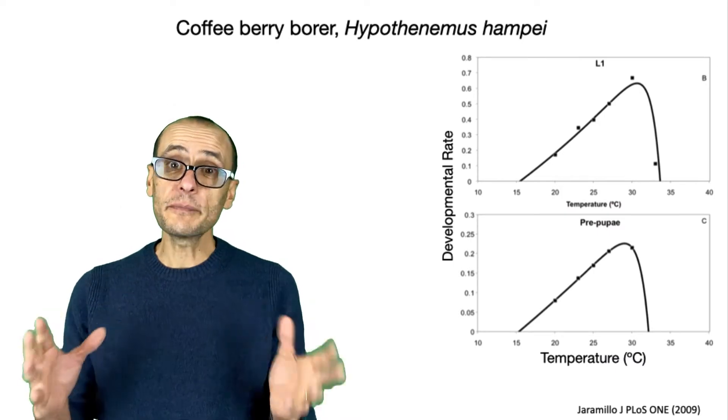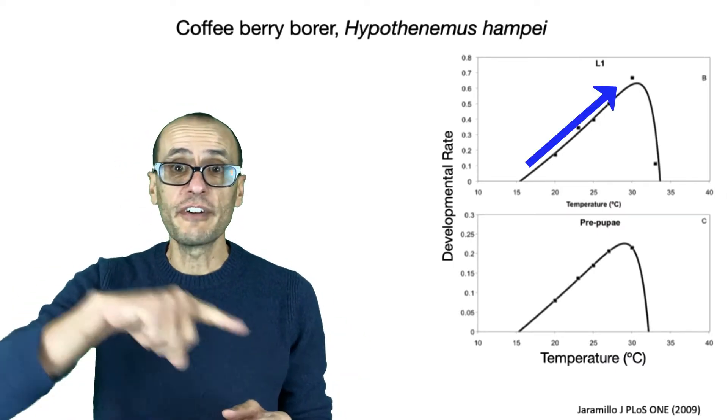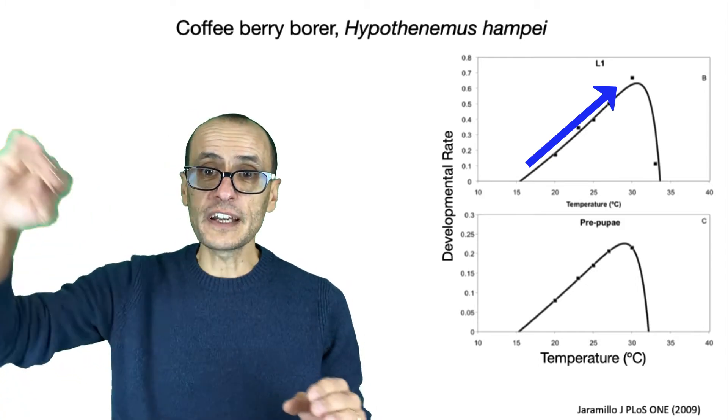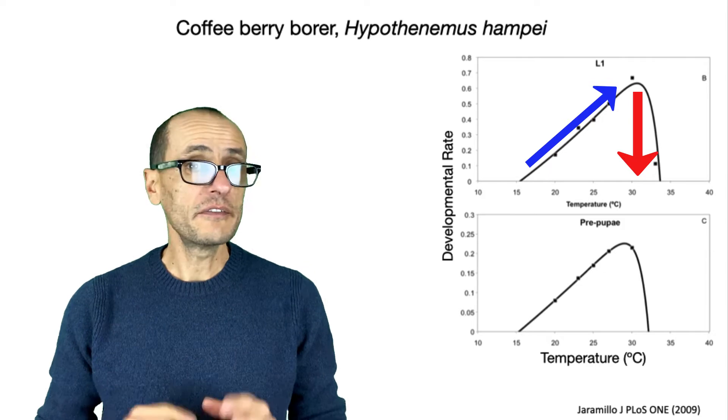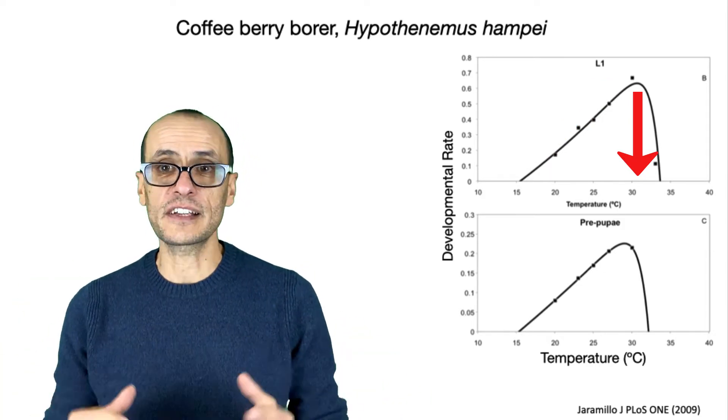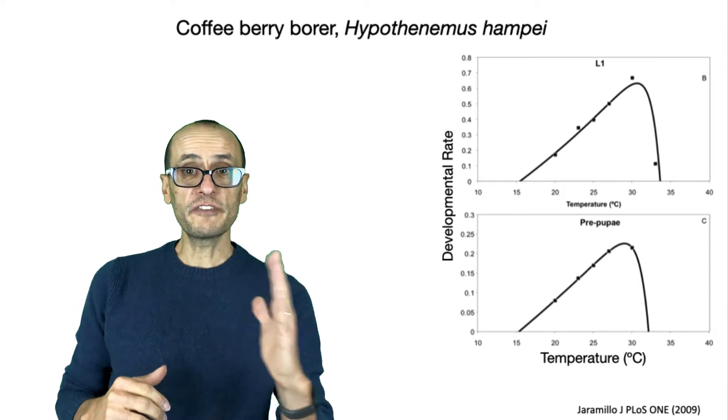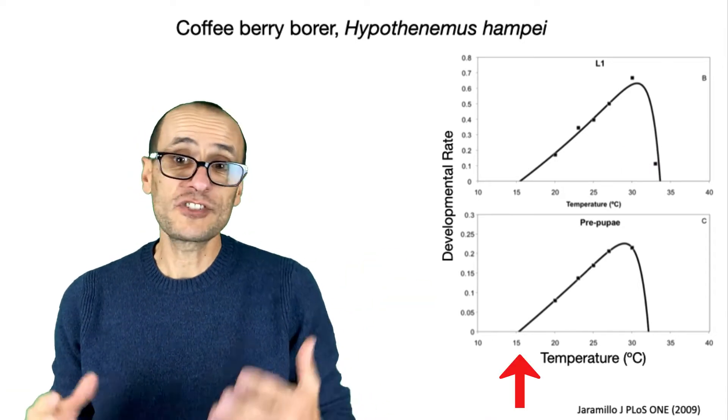This beetle has a typical developmental response to temperature. As you crank up the temperature, their developmental rates increase in this very nice linear fashion. Above this certain threshold here, they don't do so well. This is about 30 degrees centigrade, or 86 Fahrenheit. And below 15 centigrade, or about 60 degrees, they also can't develop. It's just too cold.